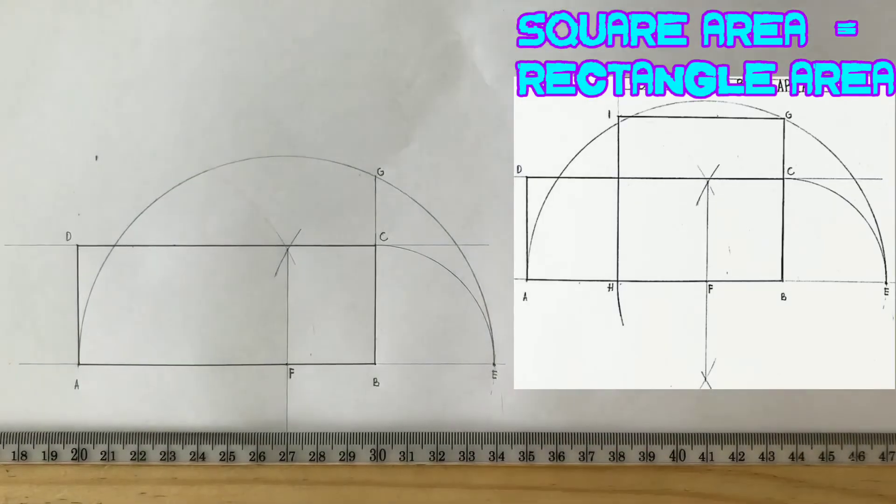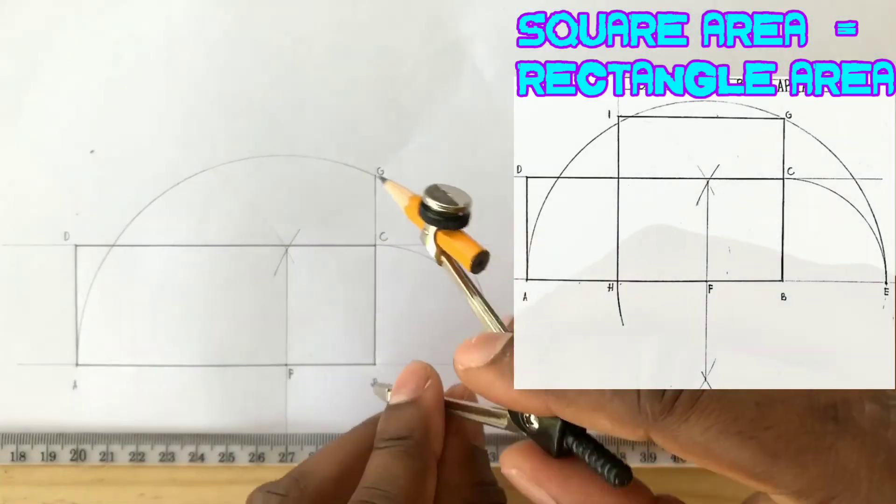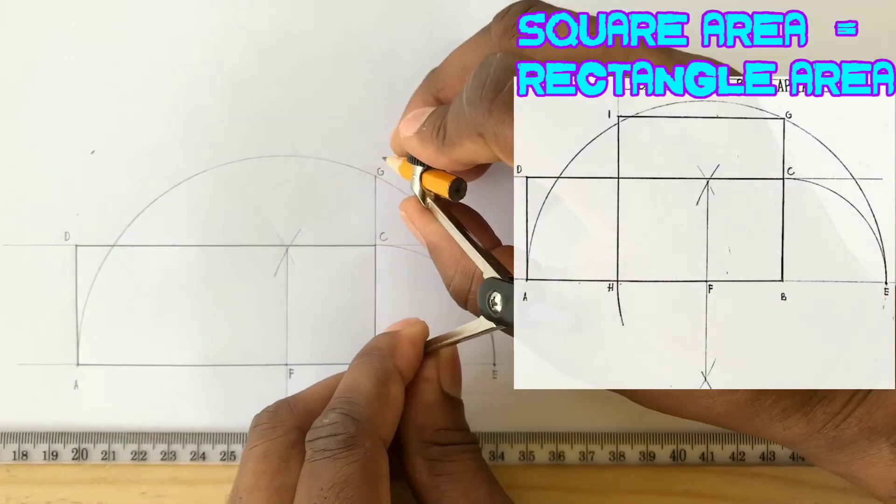The measurement of BG is now the required length of a side of our square.